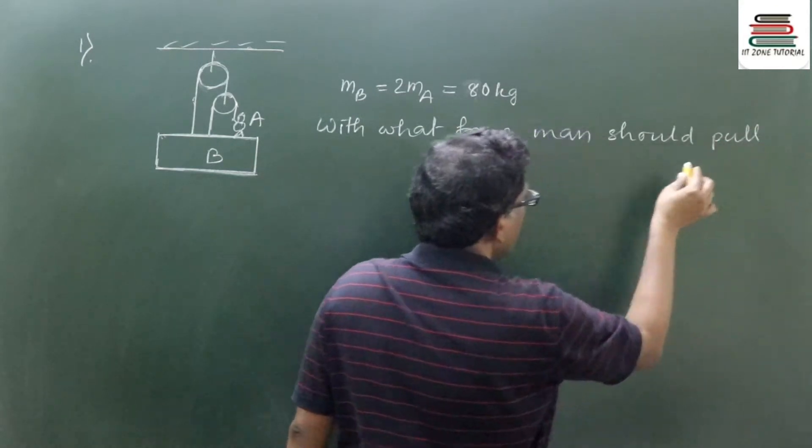For the man: he is pulling the rope with tension T upward, weight of the man is 40g downward, and he experiences contact force N upward. So equation 2 is: T plus N equals 40g.